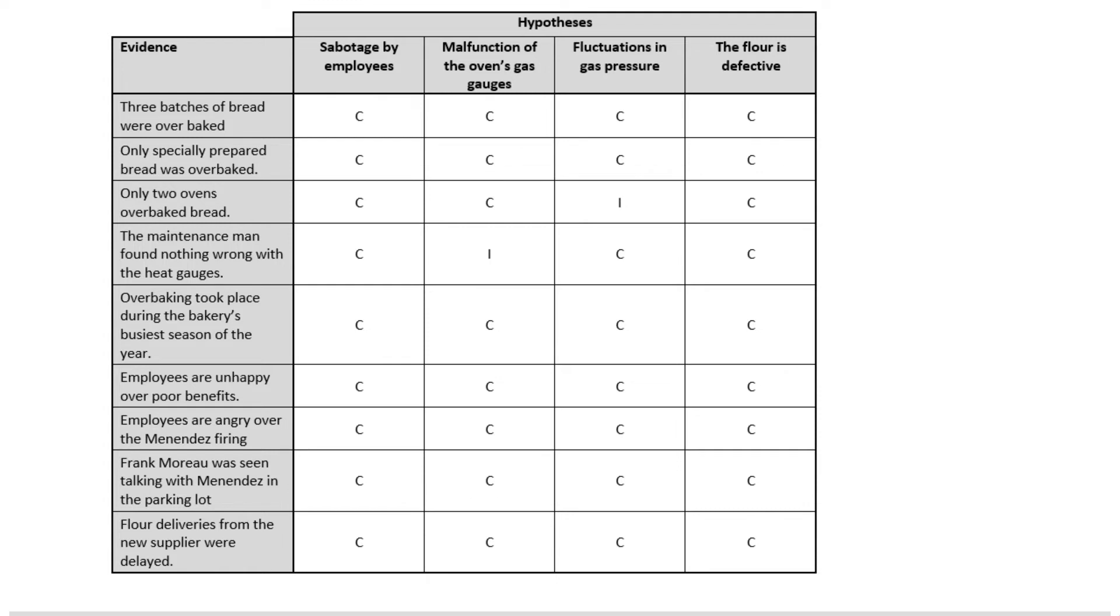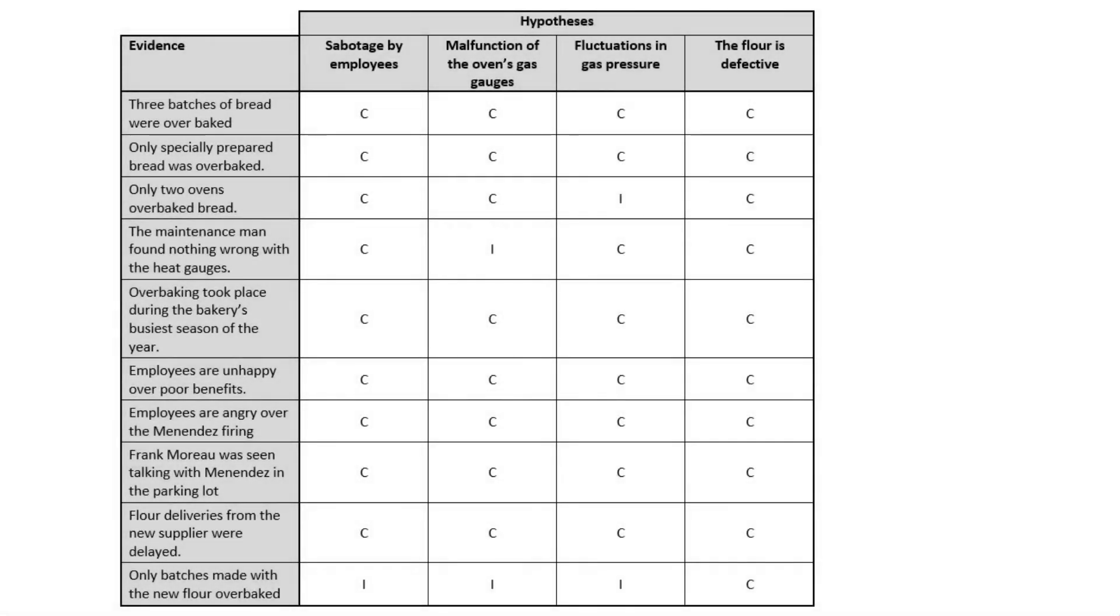Now suddenly it seems as equally likely as sabotage by employees. If you are just reporting this out, you might say we have two hypotheses and they both seem consistent with all the evidence, but we have been able to rule out plausibly the gas pressure and the gauges as the cause. But if you go to the baker, the baker is clearly going to want to know which of those two hypotheses it actually is, and so you can again go back out and get some more information.